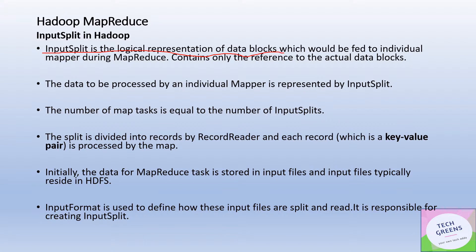Now let's look at what is an input split. Input split is a logical representation of the data blocks which would be fed to an individual mapper. It is one slice of data — a logical representation of the actual physical data — and it would be fed to a single mapper in MapReduce. It only contains the reference to the actual data block addresses and other metadata information, but it does not represent the physical data itself. This means the number of mapper tasks is equal to the number of input splits in MapReduce.